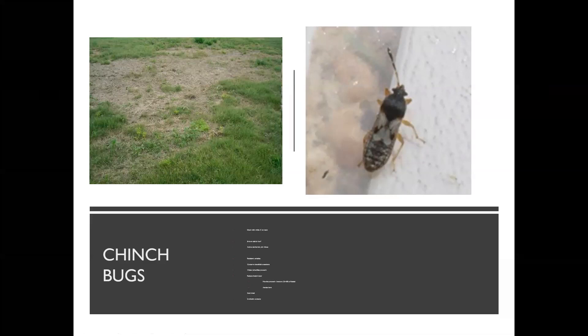Another method is the coffee can method: get a large metal can, cut out both sides, screw it down into the ground, fill it with water, and look for chinch bugs floating to the top. I don't do that because I don't have a can like that and wouldn't want to carry one around when looking for chinch bugs.